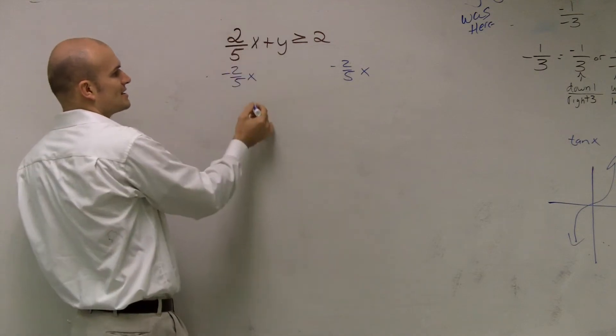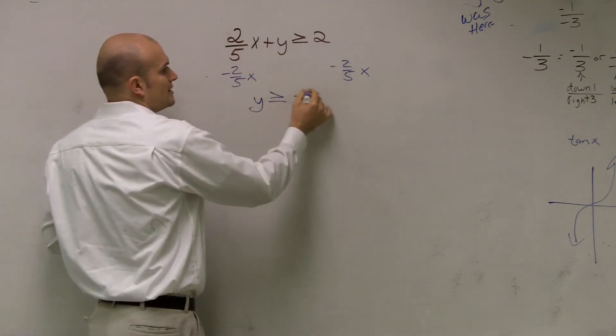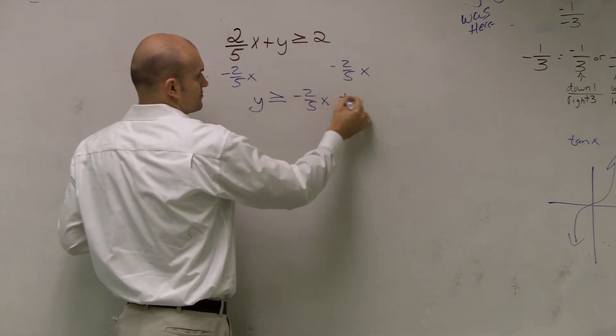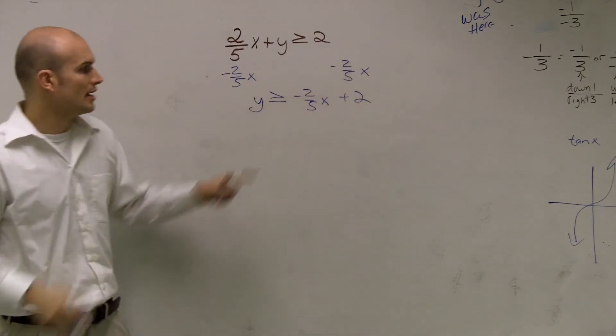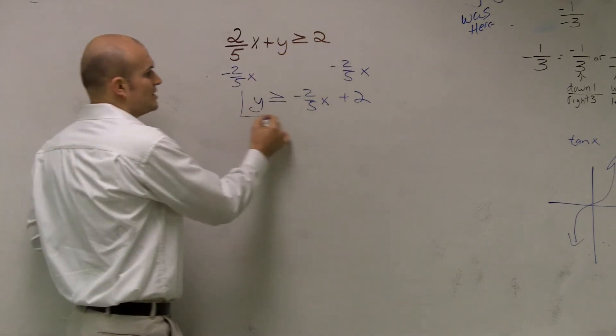So I can simply subtract a 2 fifths x on the left and the right side. Now, therefore, that's going to cancel out to 0. So I'd be left with y is greater than or equal to negative 2 fifths x plus 2. The reason is plus 2 because that's a positive 2.